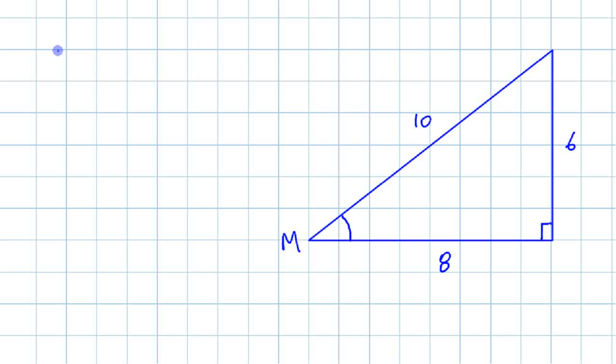Writing trig ratios, there's three primary trig ratios. One is called the sine ratio. One is called the cosine ratio. One is called the tangent ratio. And they all have abbreviations on your calculator or when you write them.